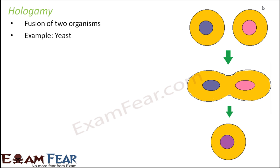Finally, the last type of syngamy is hologamy. In hologamy, there is no separate production of male and female gametes — the organism itself behaves like a gamete. Two whole organisms fuse together to form a new organism. It is seen in yeast, where two yeast cells themselves fuse to form a new organism. The term 'holo' means whole, so since the whole organism fuses with another organism, it is called hologamy.